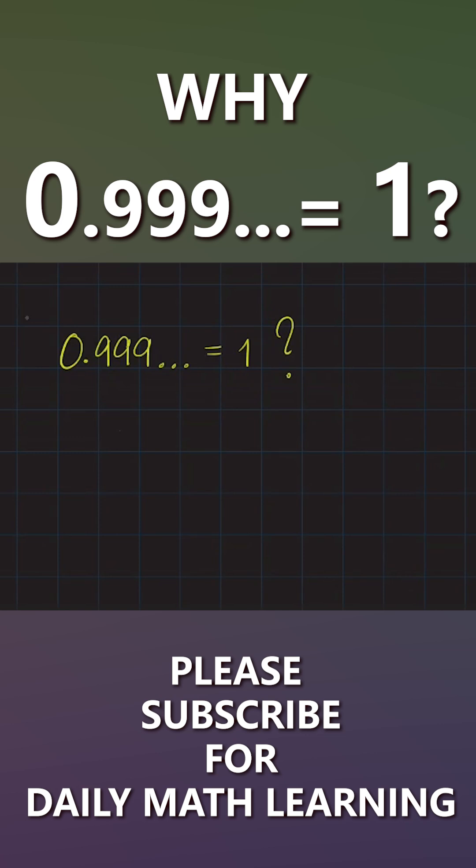So why is 0.99999 equals to 1? Let's have a look. All I'm saying is this model, x, let's say this is 0.999.